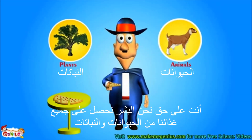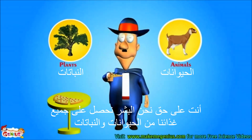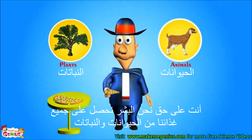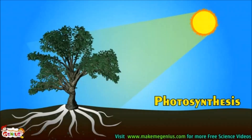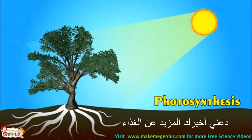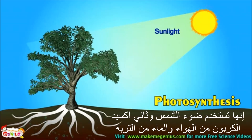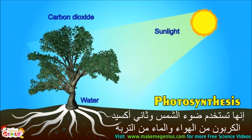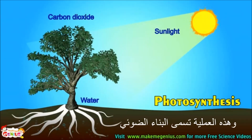You are right. We humans get all our food from animals and plants. Let me tell you more about food. Plants are the only living species who make their own food. They use sunlight, carbon dioxide from air, and water from soil to make their food. This process is called photosynthesis.